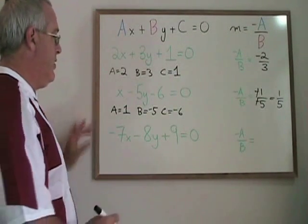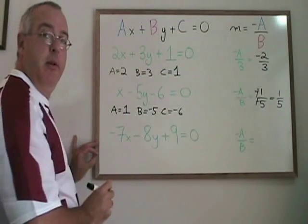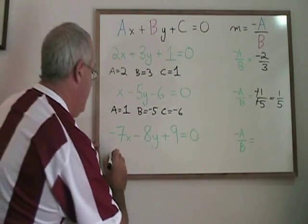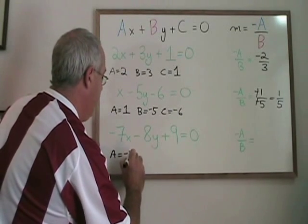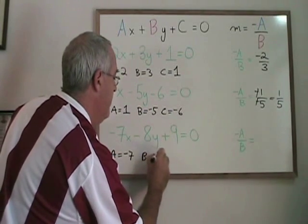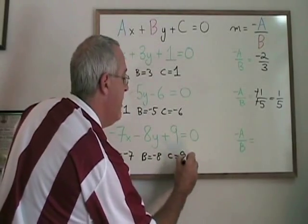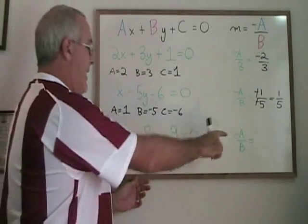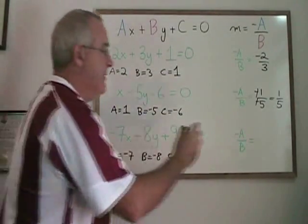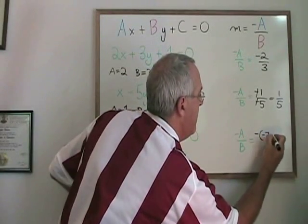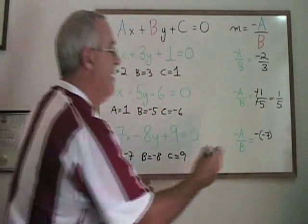In the third equation, both the a and the b are negative, so let's see how that works out. a equals negative 7, b equals negative 8, c equals 9. Negative a therefore becomes negative of negative 7, and the b is negative 8.